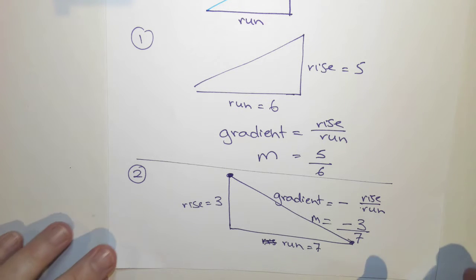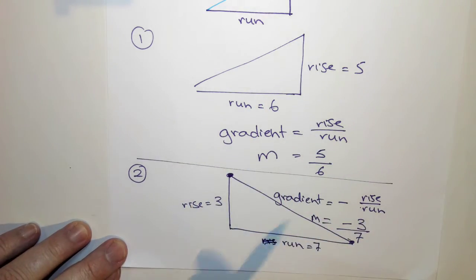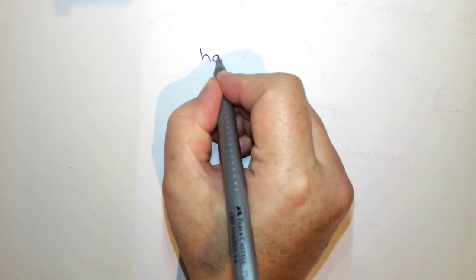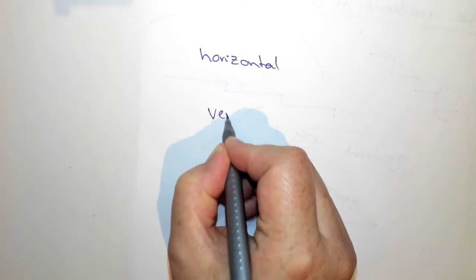So that's if I've got lines going up, lines going down. There's two other types of lines that I could have, and that is our horizontal lines and our vertical line.